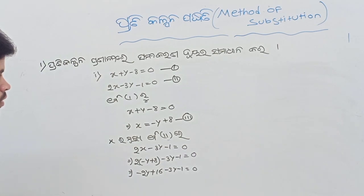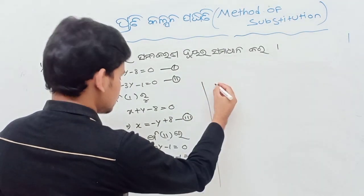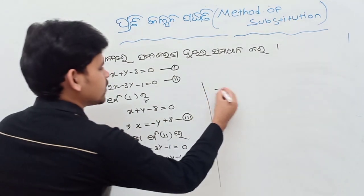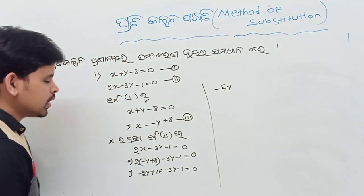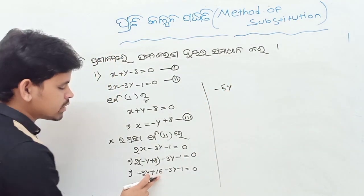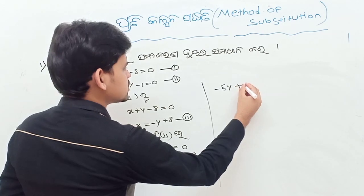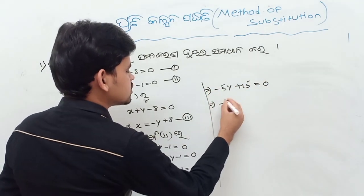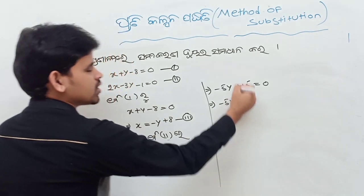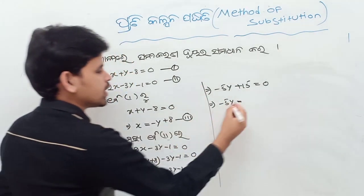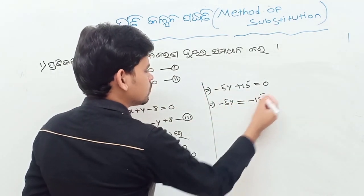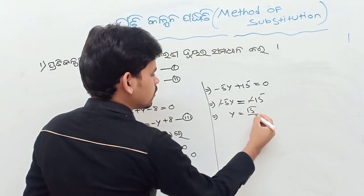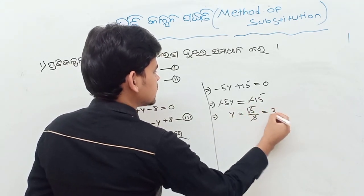So next step, minus 2y minus 3y is minus 5y — that is 5y. So next step, minus 5y equal to 0. So next step, minus 5y equal to — plus 5y. Next: minus minus, y equal to 1 by 5. The answer is 3.